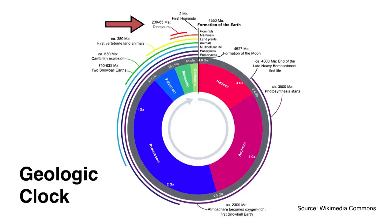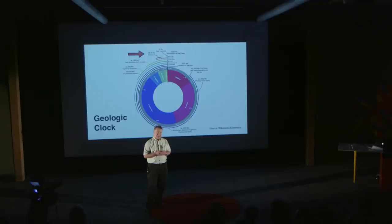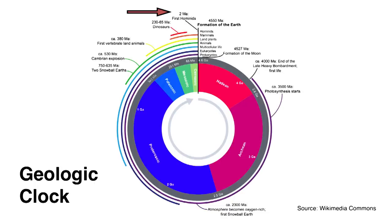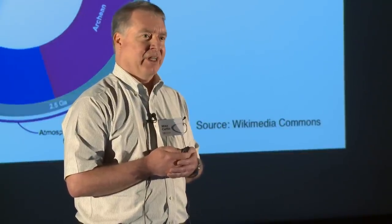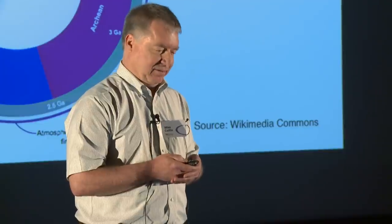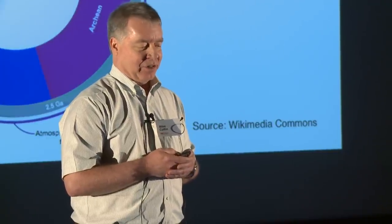Between 230 and about 65 million years ago was the reign of the dinosaurs. They ruled the Earth for about 165 million years — probably the most successful dominance of any species. To show where we are on this geological clock, hominids, our ancestors, first appeared 2 million years ago, and our species showed up 200,000 years ago. Compared with the 165 million year reign of dinosaurs, we're only 200,000 years in — a very short time in a geological sense.